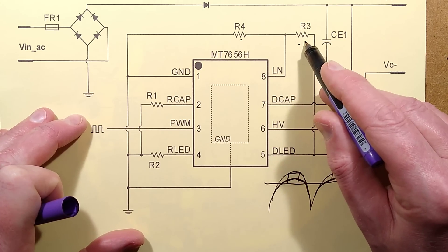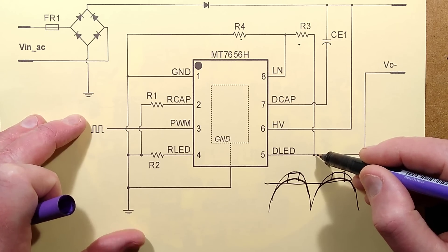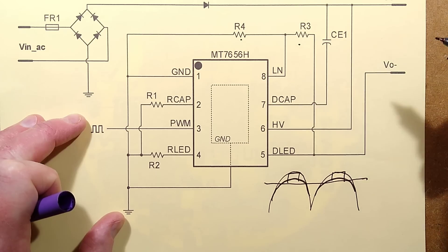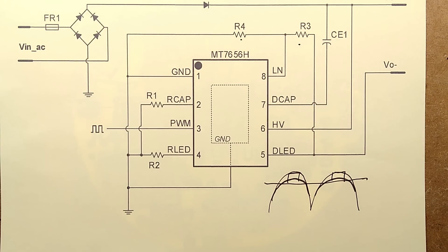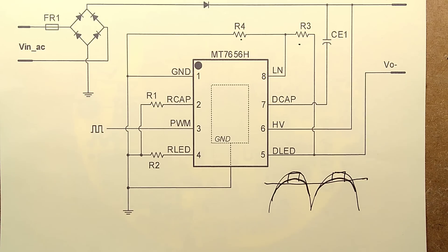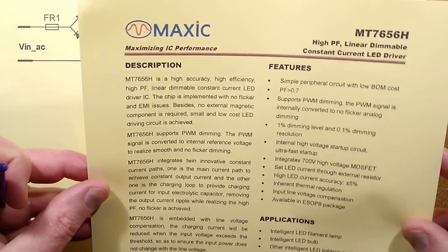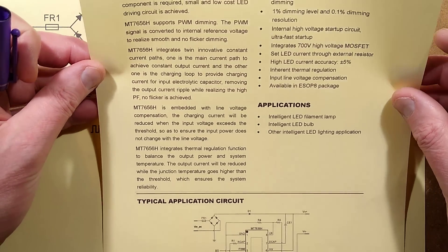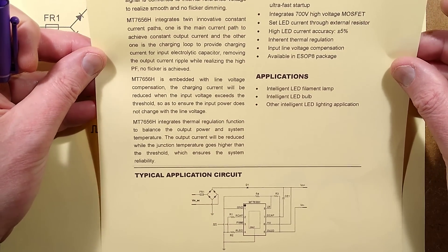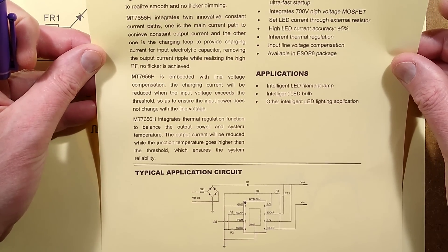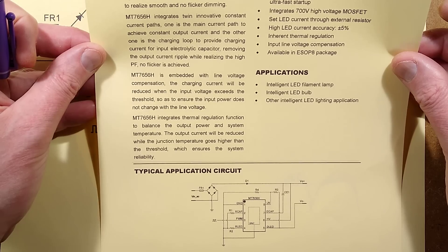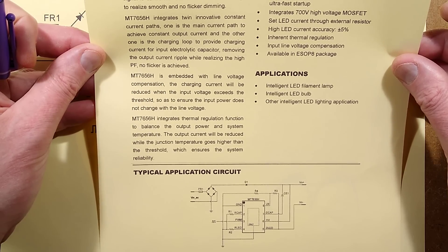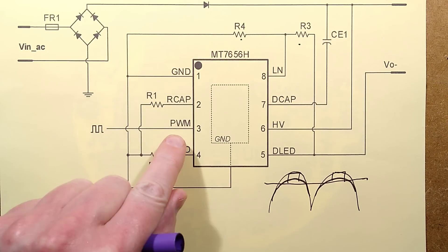And then there's these two resistors here. It's going to the LED output and the zero volt rail. And I'm not really sure what that's for. It just is cryptically marked LN. Not much of a data sheet for this. It was one page. Do I have the data sheet here, the full data sheet? Yes I do. Here it is. Nothing really major. Twin innovative constant current paths. One main current path to achieve constant output current. The other one is a charging loop to define charging current for input electrolytic capacitor. Removing the output current ripple while realizing the higher power factor. No flicker is achieved. But this device takes pulse width modulation input. Let me show you the schematic now.